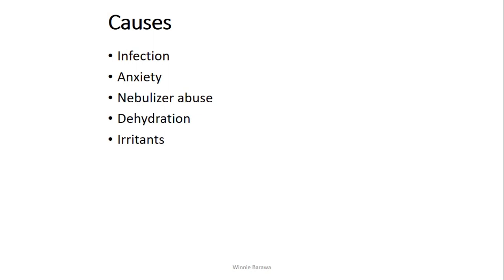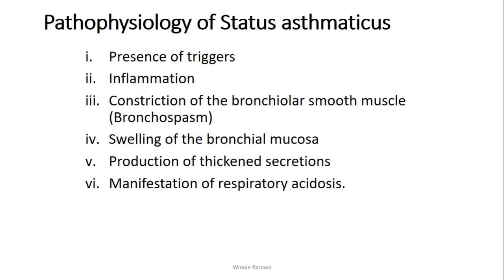Now the causes — since this is a complication of asthma, the causes will look more or less the same as what causes or brings up asthmatic attacks. We have infection, and most of the time these infections refer to upper respiratory tract infections. Then we have anxiety, which is one of the major causes of asthmatic attacks. We also have nebulizer abuse, where someone has been overusing or misusing it without following the required prescription, which can lead to complications. Dehydration and other irritants can also bring up an asthmatic attack.